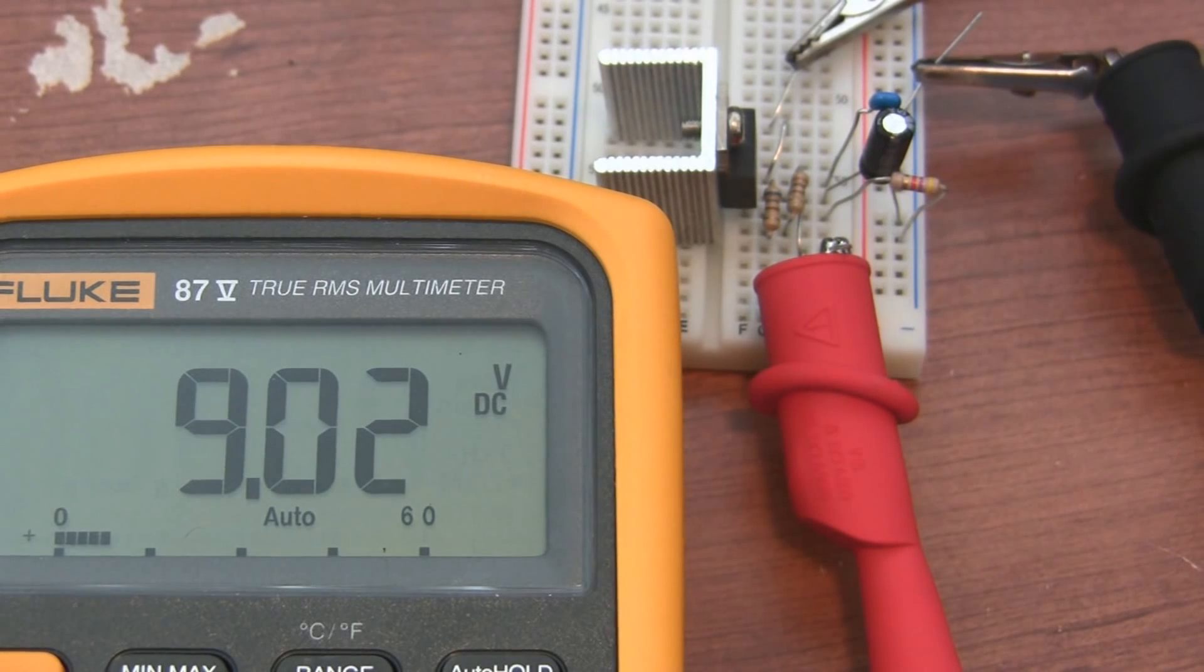So I put a 680 ohm resistor in series with a 100 ohm resistor which gave me 780 ohms and that was close enough to give me 9 volts.